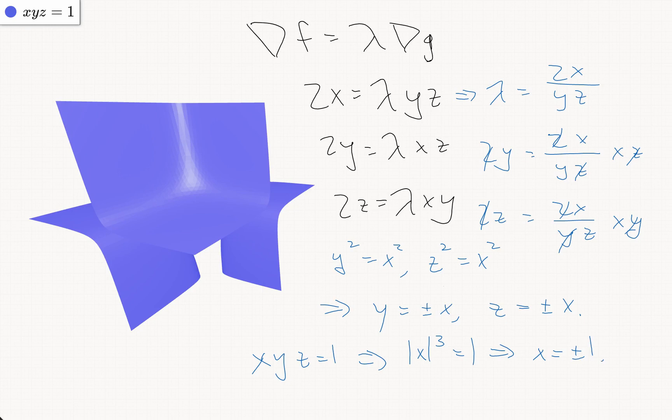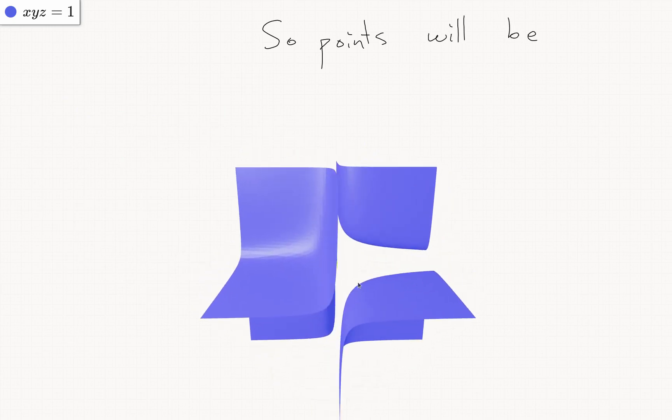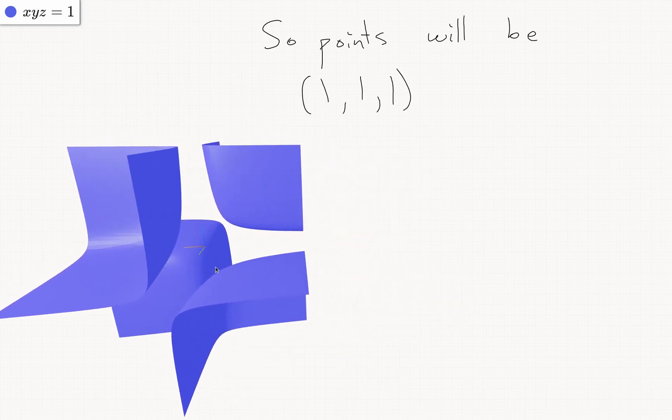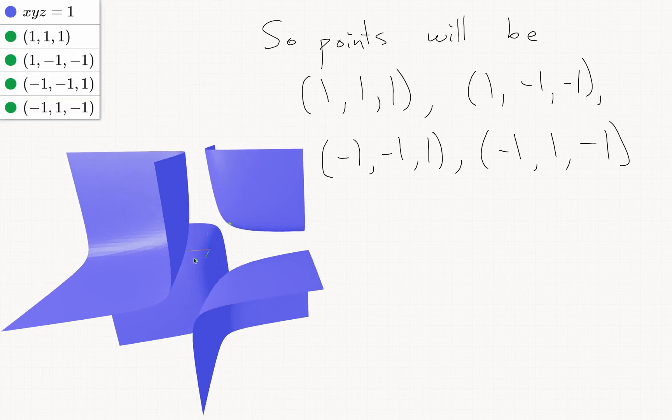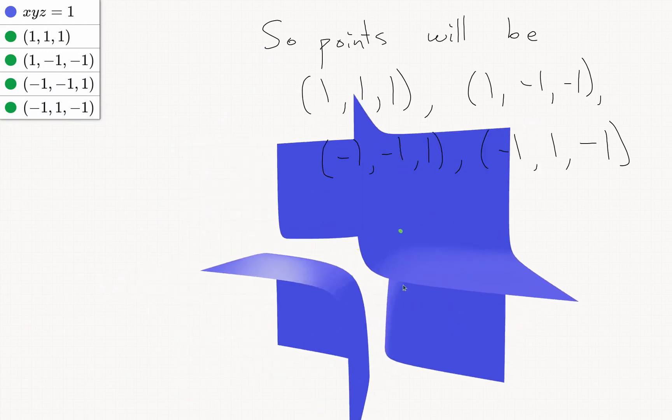So our points will be, let's look at the ones where x is 1, so the possibilities are (1, 1, 1) and (1, -1, -1). Then if x is negative 1, the possibilities are (-1, 1, -1) and (-1, -1, 1). So here's all of those four points, and these are the points on this surface which are closest to the origin.